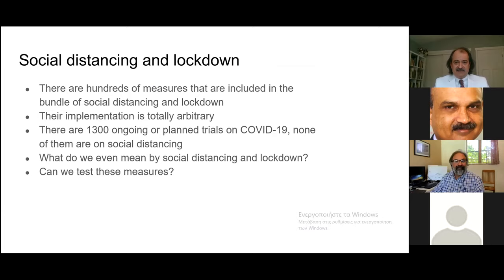How do we protect the high-risk? We have measures known to be effective, even from randomized trials: hand washing, respiratory etiquette, avoiding mass gatherings, and masks worn in proper settings. But what about social distancing and lockdowns? There are hundreds of measures bundled under those terms, implemented totally arbitrarily across states and countries. There are more than 1,300 ongoing or planned COVID-19 trials, but none of them is testing any of these social distancing measures. What do we even mean by social distancing and lockdown, and can we test them?